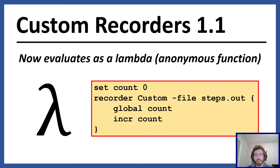Hi and welcome to a quick update on custom recorders. Custom recorders now evaluate as lambdas or anonymous functions within the global namespace. This means that each custom recorder will have its own private scope, so you can have private variables within it. And anytime you want to access a global variable, you have to declare it with the global command or using the upvar command in Tcl.